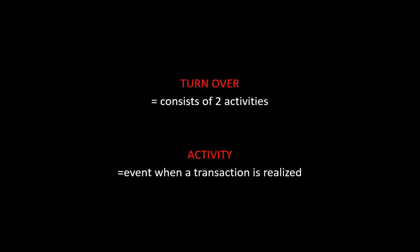When we talk about asset efficiency, we talk about turnovers and activity. A turnover consists of two activities — events when a transaction is realized. For inventory turnover, the two events are the purchase and the sale. For accounts receivable turnover, the two events are the sale and the collection.